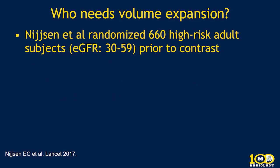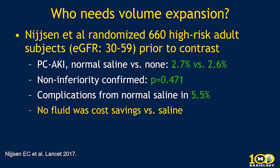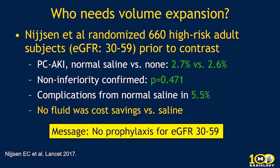What about volume expansion? A randomized study in The Lancet in 2017 of high-risk adult subjects prior to contrast, both IV and IA, found that post-contrast AKI risk was very similar for patients getting either no prophylaxis or normal saline — non-inferiority was confirmed. Additionally, volume expansion caused complications from normal saline in 5.5% of patients, usually related to congestive heart failure. So no fluid represents cost savings versus saline, and prophylaxis is generally not indicated when eGFR is 30 to 59.